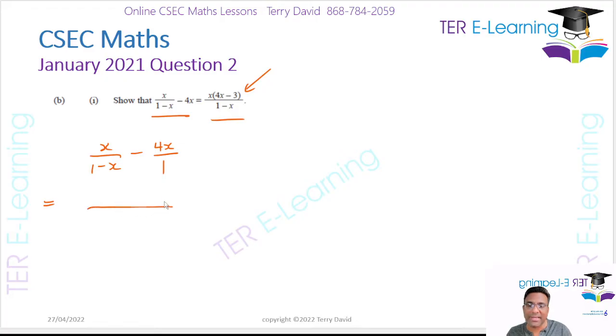Now, you need to find the LCM of this 1 minus x and 1. So the LCM has to be 1 minus x. Now, in your working column here, you're going to take whatever the LCM was, which is 1 minus x, and I'm going to divide it by this denominator here, which is 1 minus x, and I'm going to get 1. But when I get that answer, I need to take that answer, I need to multiply it by x.